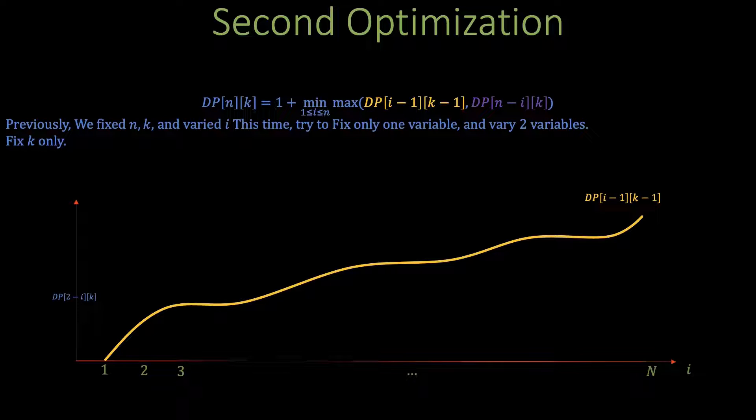First we'll try to plot dp[2-i][k] say the blue curve as we discussed before it is a decreasing function as i increases because we are searching fewer and fewer buildings. Now we'll try plotting dp[3-i][k] the orange curve. You'll notice something very interesting about how I plot dp[3-i][k]. At each index i I made sure that the orange curve dp[3-i][k] in this case is above the blue curve dp[2-i][k]. This is because for fixed i dp[3-i][k] is always at least dp[2-i][k] as we're searching one more building with the same number of eggs.